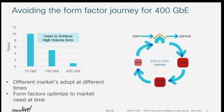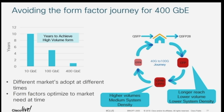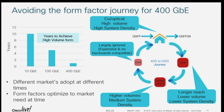So we don't really have time to do that journey anymore. Typically, you start with longer reach stuff — it's lower volume, lower system density, so it can afford to be bigger. Then as technology matures, you get a bit smaller, your system densities are getting bigger. Finally, you get to high volume with all reaches in a single form factor, everyone can use it, economies of scale kick in, and it's off to the races. You want to figure out how to get there as quickly as possible.